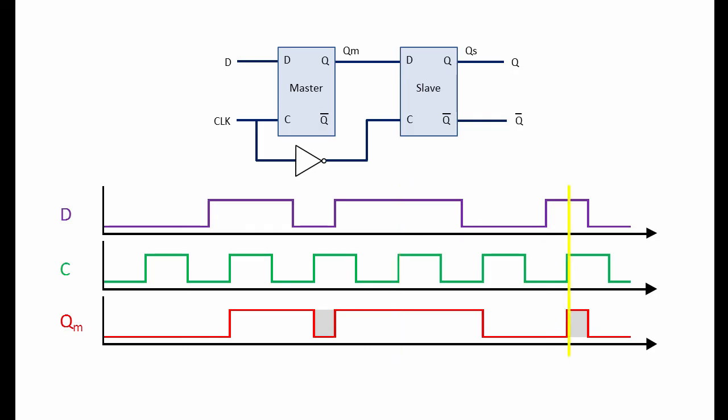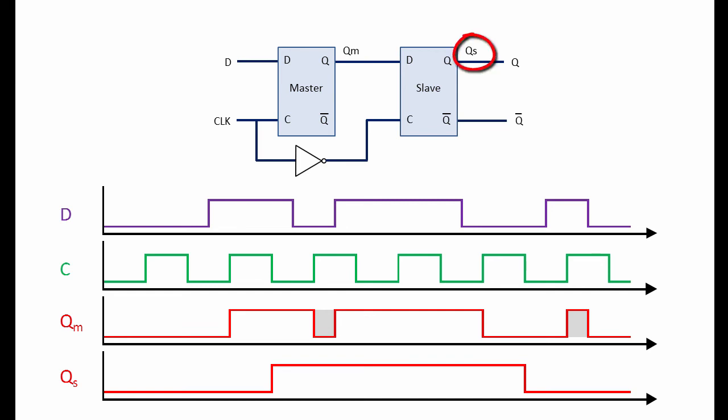A couple of cycles later, and we can see that the value of D is changing again during the high phase of the same clock cycle. Another glitch, not ideal. Now let's take a look at QS, the output of the slave, and therefore the output of the flip-flop as a whole.